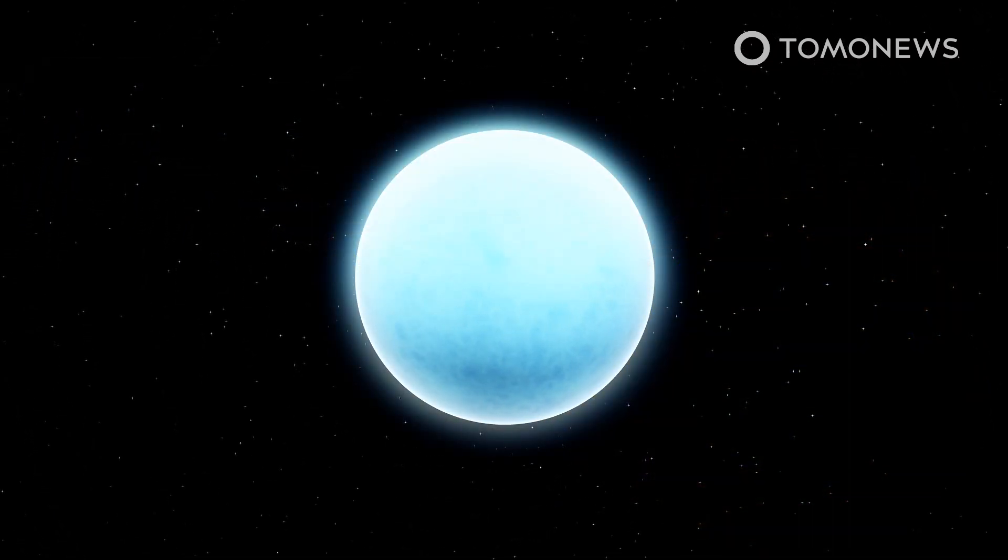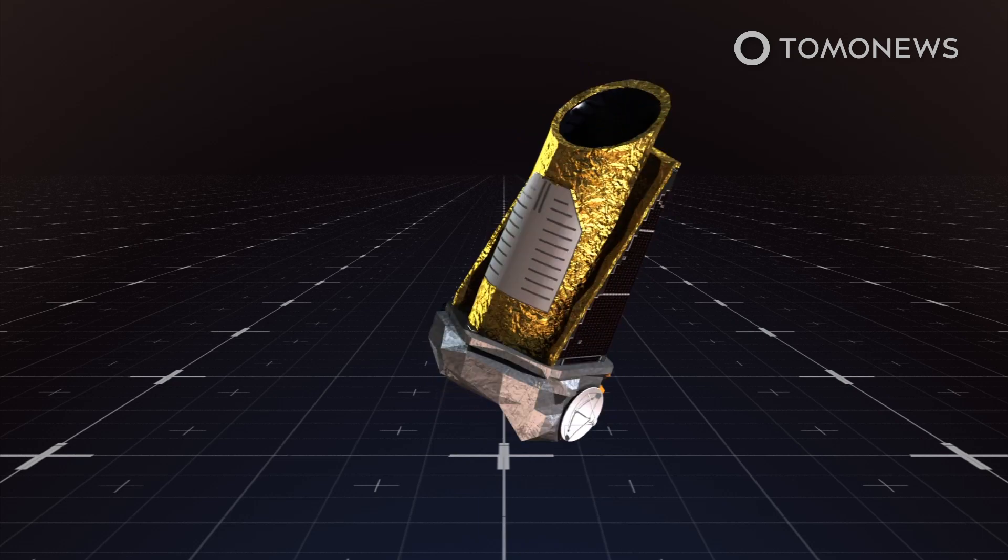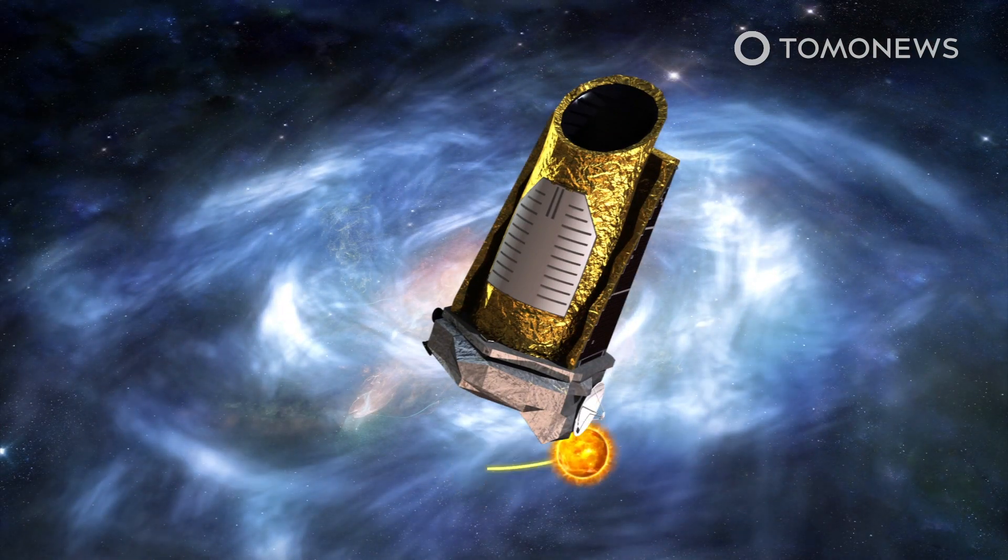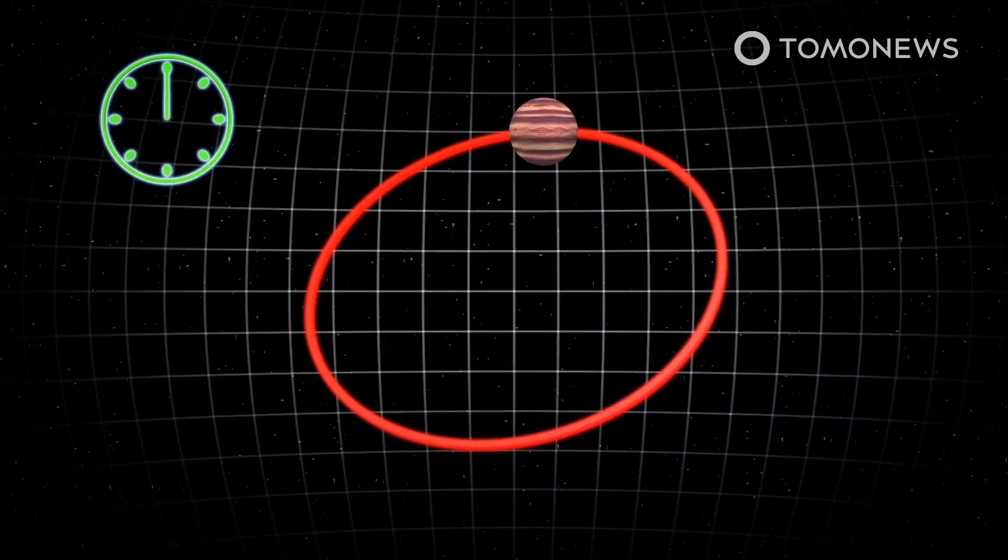NASA published the study in Monthly Notices of the Royal Astronomical Society. NASA says the retired Kepler telescope, which revolved around the sun to search for exoplanets, had captured the archival footage that made this discovery possible.